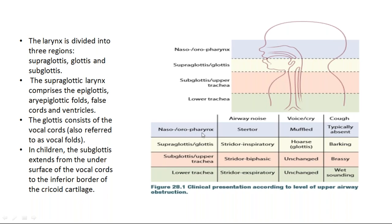In the nasopharyngeal region, airway noise is stertor, the voice or cry is muffled, and cough is typically absent. In the supraglottic or glottic part, there will be inspiratory stridor, and the voice or cry is mostly coarse. When the glottis is involved, cough is a barking type. In the subglottis or upper trachea, the stridor is biphasic and voice or cry is unchanged, with a brassy cough. In the lower trachea, stridor is expiratory and the cough is a wet-sounding cough.